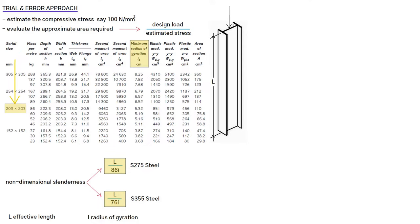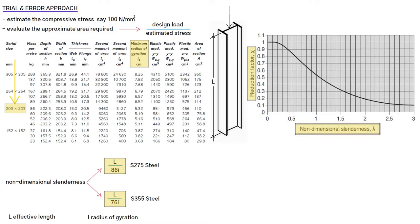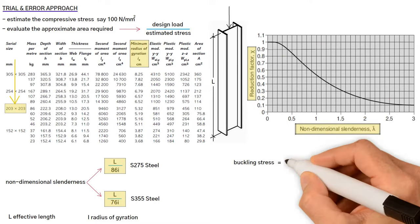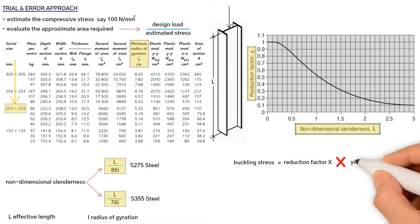After that we evaluate the buckling reduction factor, x, from the design curve, and determine the buckling stress, which equals buckling reduction factor x times yield strength.